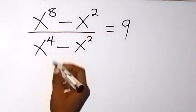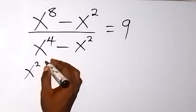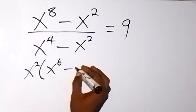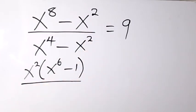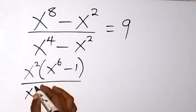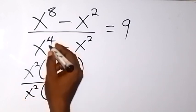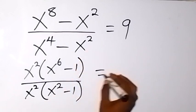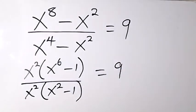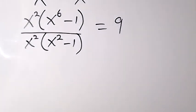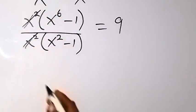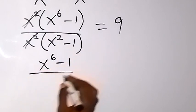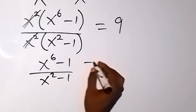We can factor x squared from the numerator and we have x squared into bracket — what will be left is x raised to power 6, then minus 1. Also from the denominator we can factor x squared out and have x squared into bracket, x squared will be left here, then minus 1, which equals 9. So from there, we can see that x squared will cancel and we are left with x raised to power 6 minus 1 over x raised to power 2 minus 1, equals 9.